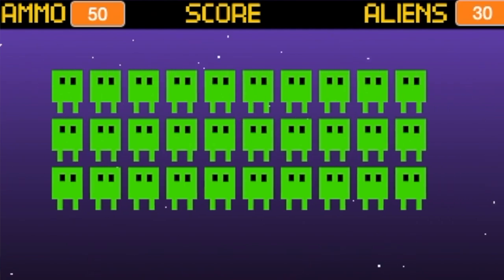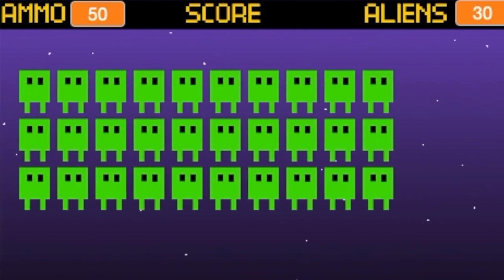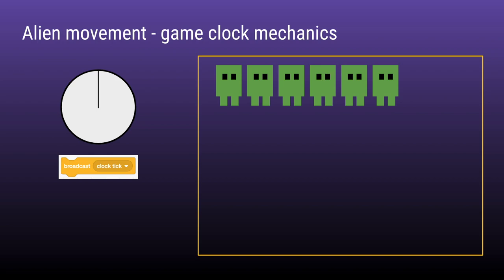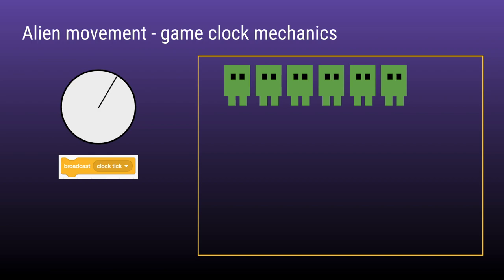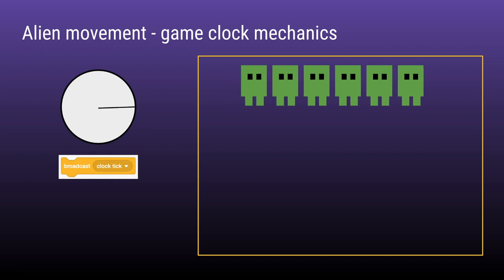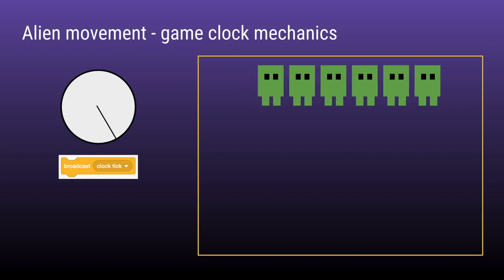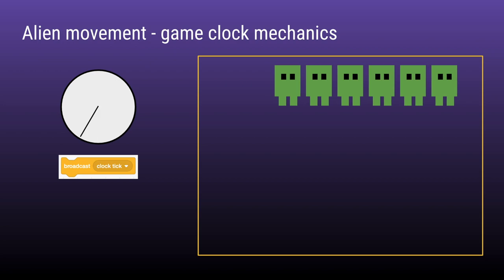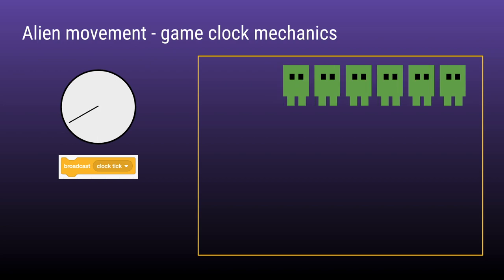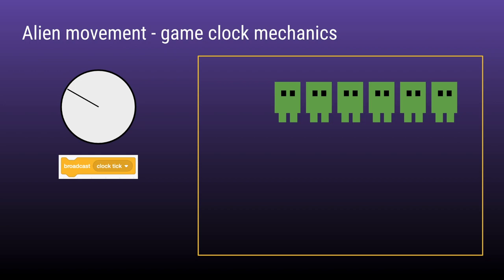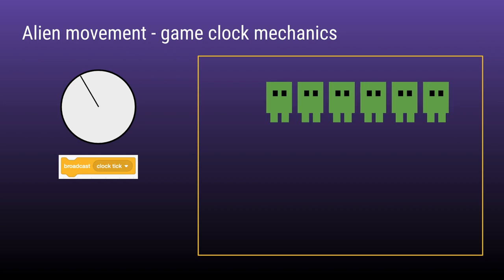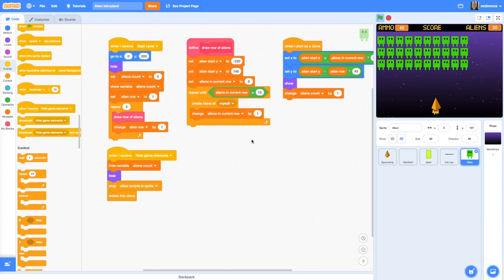The basic mechanic of making the aliens move together is going to work like this. The game's stage is going to effectively work like a clock, and with every tick of the clock a signal or message is going to be broadcast to all the sprites in the game. The alien sprite clones will pick up this clock tick message and trigger a move routine in response. To get this clock ticking mechanism working we need to select the game's stage and go to the code editor for it.